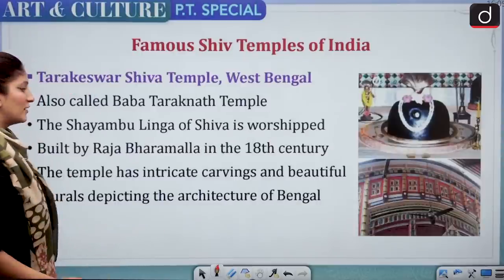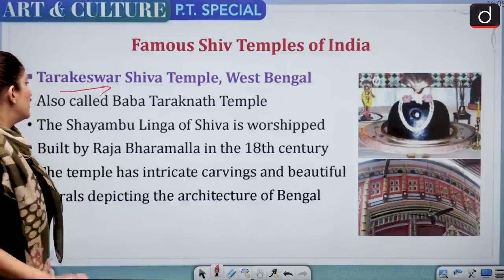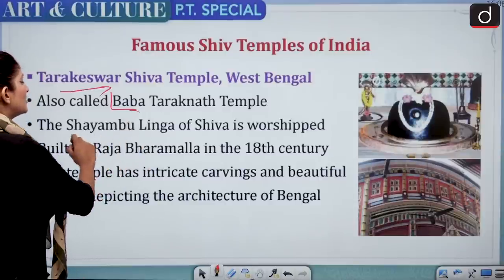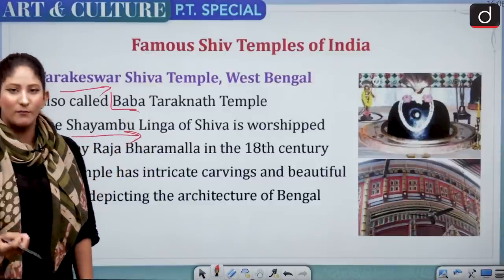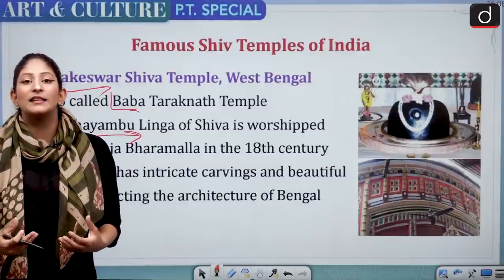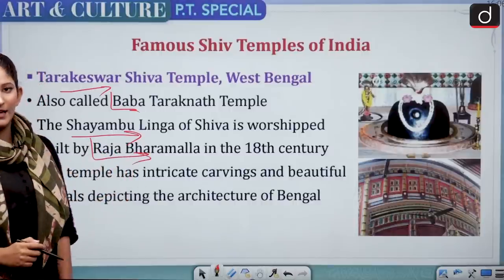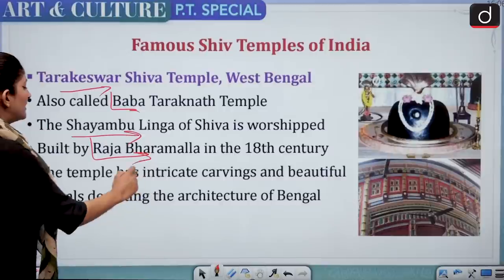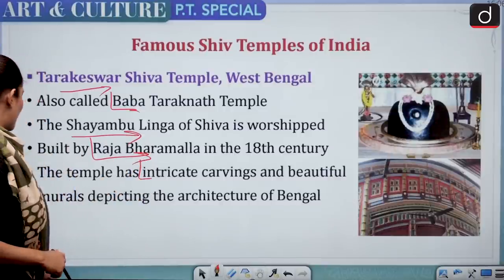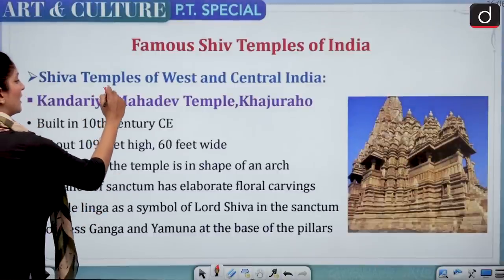Tarakeshwar Shiva Temple of West Bengal is also known as Baba Taraknath Temple. The Swayambhu Linga of Shiva is worshipped there — Swayambhu meaning it originated by itself through the powers of Shakti. It was built by Raja Bharman in the 18th century. The temple has intricate carvings and beautiful murals depicting the architecture of Bengal.